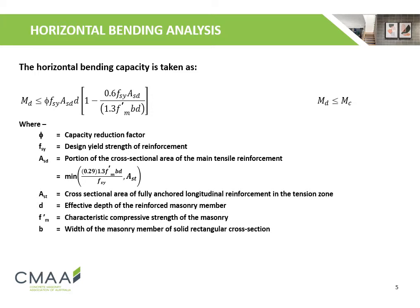The horizontal bending capacity shall be taken as the equation shown, where phi is the capacity reduction factor; Fsy is the design yield strength of the reinforcement; ASD is the area of the main tensile reinforcement; AST is the area of the fully anchored longitudinal reinforcement; D is the effective depth of the reinforced masonry member; F-M is the characteristic compressive strength of the masonry; and B is the width of the masonry member.